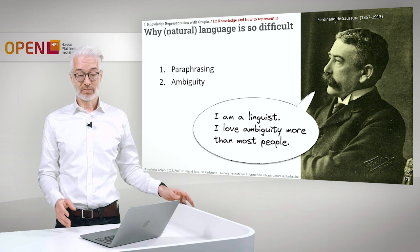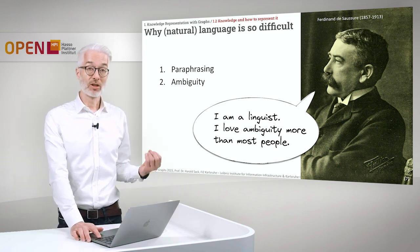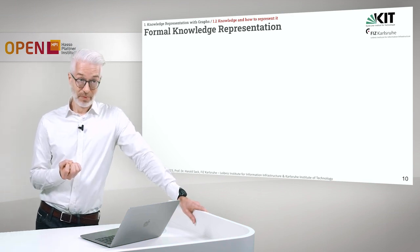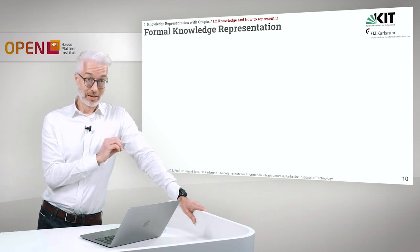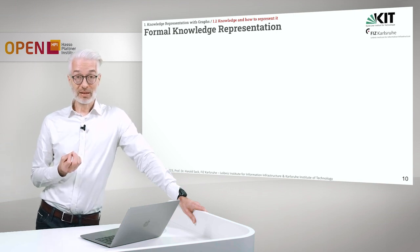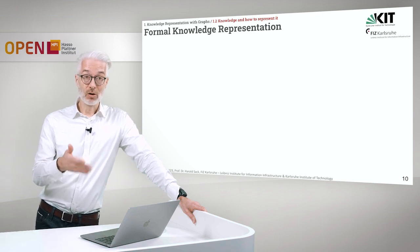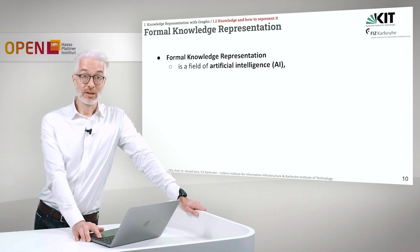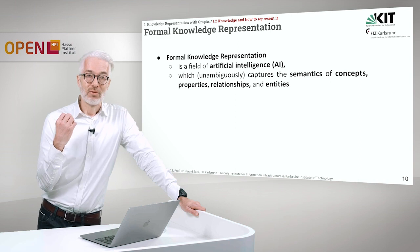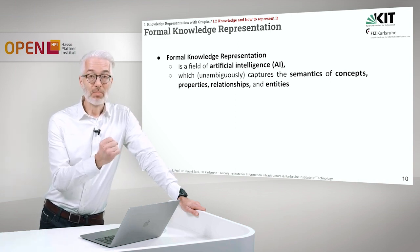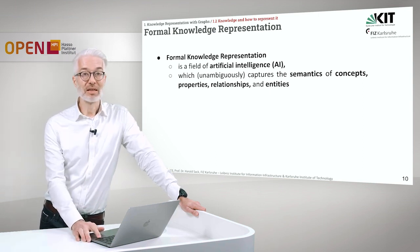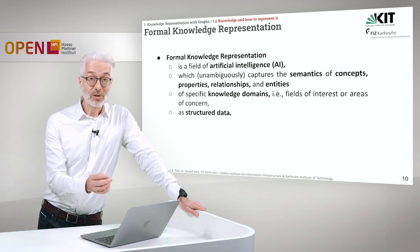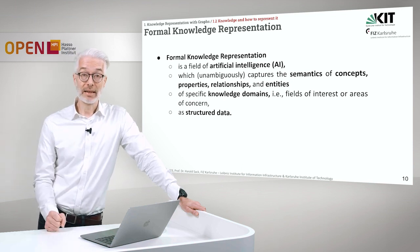Ambiguity can occur on many different levels, and this is one of the major obstacles and challenges we have to solve in natural language processing. What we want to do is formal knowledge representation. Since language is already so difficult, it might not be the best means for knowledge representation for a machine, because the machine would also have to learn how to disambiguate and understand it. We need something more formal — a formal knowledge representation, which is a field of artificial intelligence. A formal knowledge representation unambiguously captures the semantics — the meaning of concepts, properties, relationships, and entities — of specific knowledge domains, in a way that the machine can understand and process as structured data.